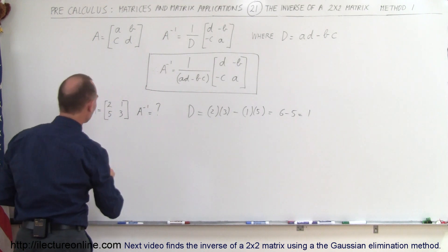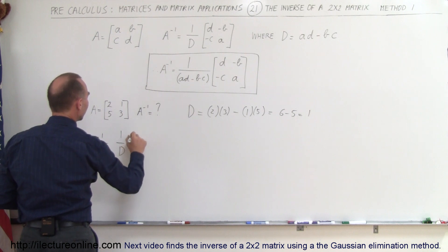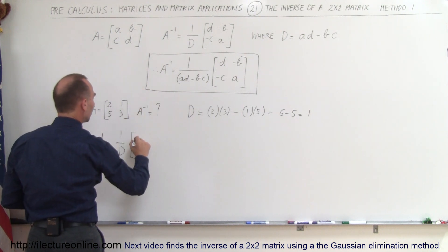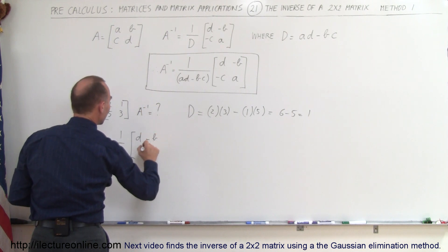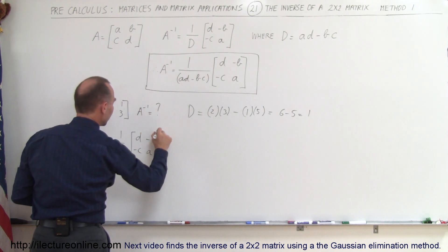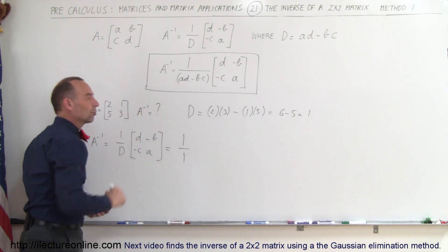So now we can say that the inverse of the matrix is equal to 1 over the determinant times the elements that would be d and a interchanged, and the elements b and c change the sign. So this is equal to 1 divided by 1, because in this case, the determinant is 1.